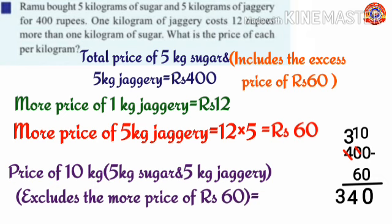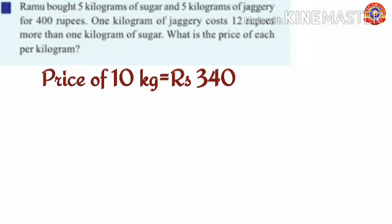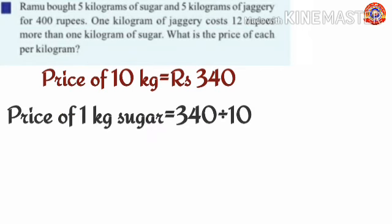To find the price of 1 kilogram of sugar, divide 340 by 10. The divisor is 10, which has 2 digits, so we take the first 2 digits of 340, giving us 34.